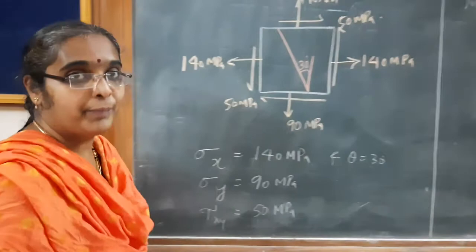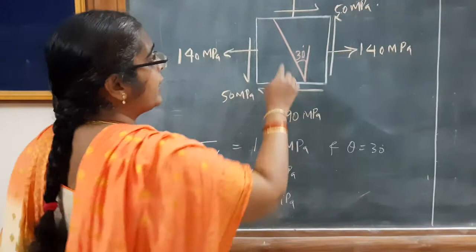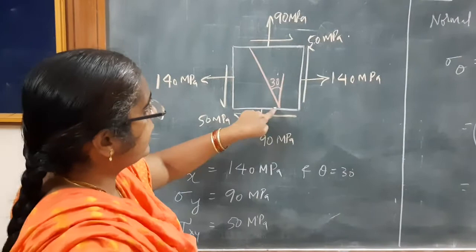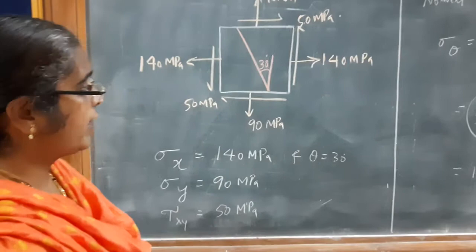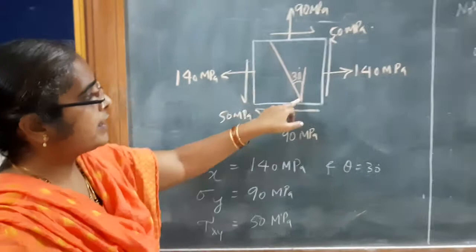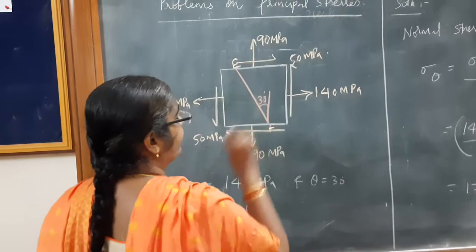Axial stress acts perpendicular to the member whereas shear stress acts parallel to the member. The shear stress is 50 MPa. We need to find the normal stress and shear stress on this element inclined at an angle of 30 degrees. So the given angle is 30 degrees. Let us learn how to find the normal stress and shear stress on the inclined plane EF.